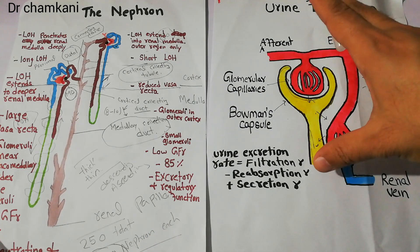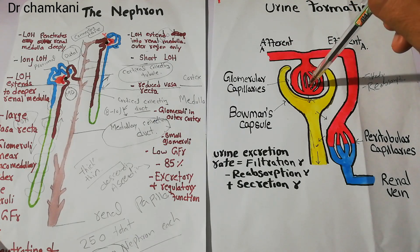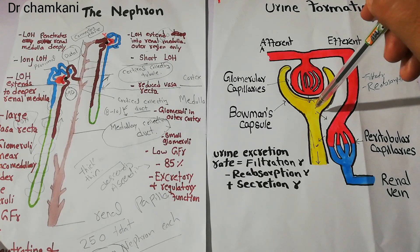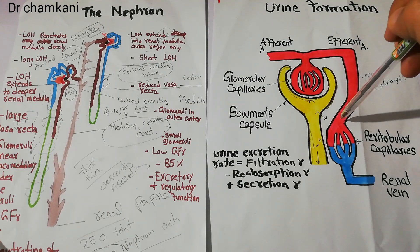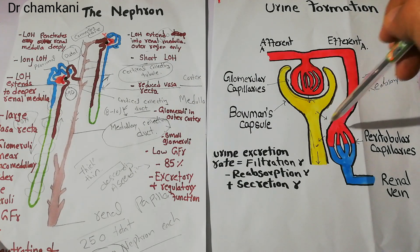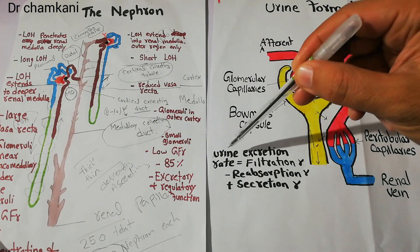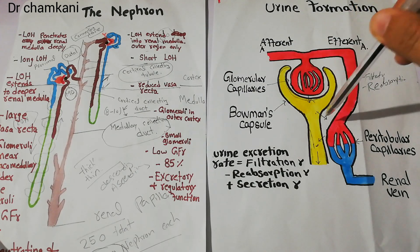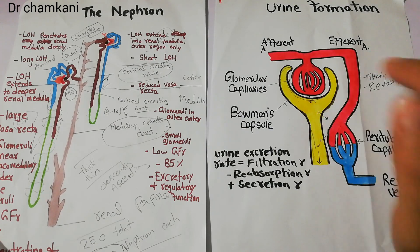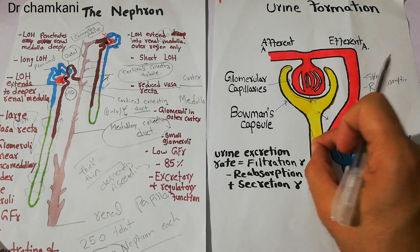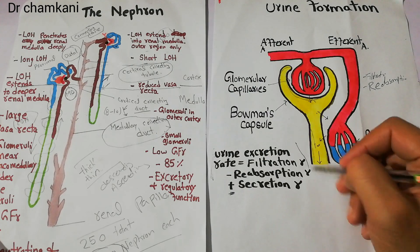In summary, urine formation begins at the level of nephrons. Inside the nephron, blood is filtered in the glomerulus — this is filtration. The filtrate then moves through the tubules of the nephron, where some substances get reabsorbed into the blood vessels and some substances are secreted from the blood back into the tubule. The whole process is summarized as: urine excretion rate = filtration − reabsorption + secretion. Reabsorbed substances are subtracted because they are removed from the filtrate, and secreted substances are added back.